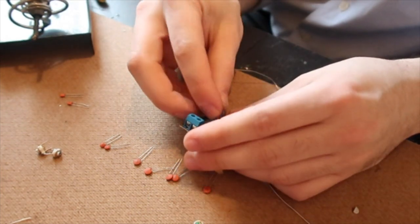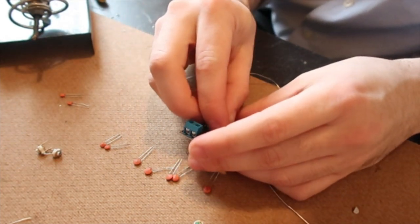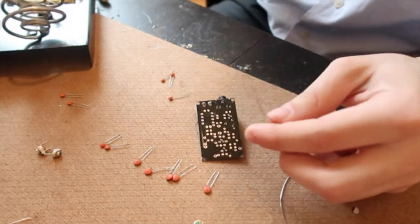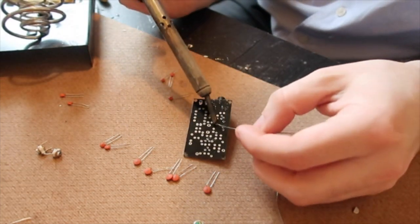This is a variable resistor. This is the 103. 103s are 10k or 10,000 ohm resistors. And let's just solder this guy here.